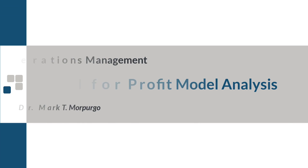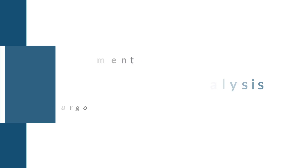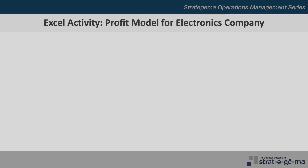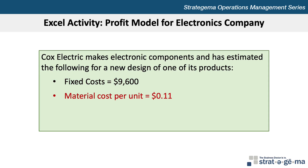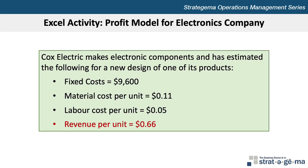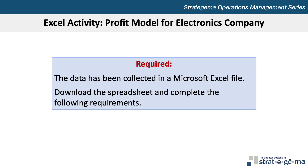This problem walkthrough video will demonstrate how to determine the profit for an electronics company given per unit revenue, variable costs, and total fixed costs. Cox Electric makes electric components and has estimated the following for a new design of one of its products: fixed costs are $9,600, material cost per unit is $0.11, labor cost per unit is $0.05, and revenue per unit is $0.66. The data has been collected in a Microsoft Excel file. Download the spreadsheet and complete the following requirements.